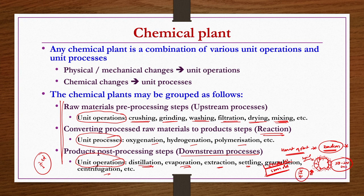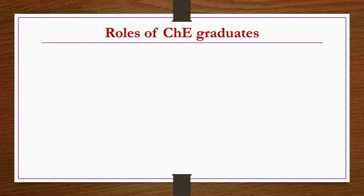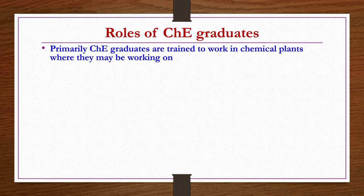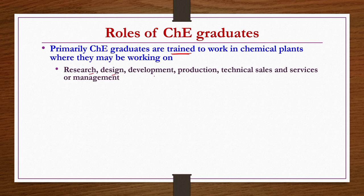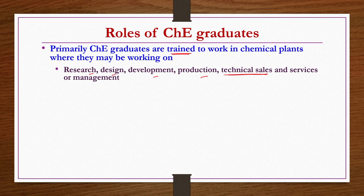What are the roles of chemical engineering graduates in chemical plants? A chemical engineering graduate hired by a chemical industry will receive training to work in different aspects of the plant. These may include research, design, development, production, technical sales — which is different from marketing sales — services, or management. Graduates would be trained in those aspects to be comfortable working in any segment of the chemical plant.